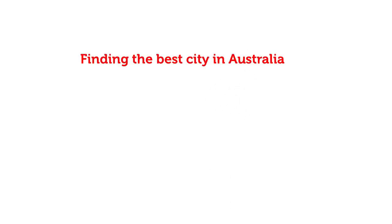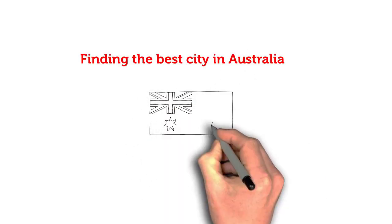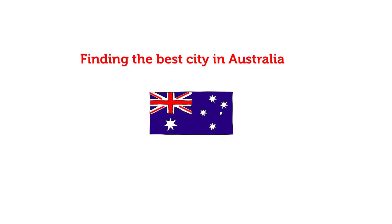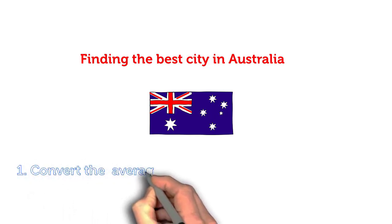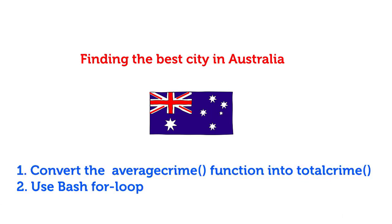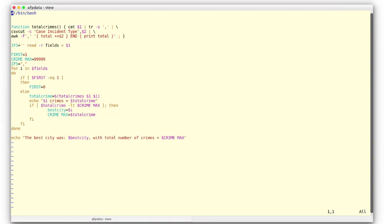Our final quest in this project is to find the best city in Australia that had the least number of crimes over the pre-2013 period. Essentially, we would need to find the summation of the city columns and then compare the sums to find the city with the lowest total sum. To develop the code, we will reuse the average function's sum part developed above and call it inside a loop. Now let's see the full code. The first line in the script, crimestat.sh, indicates to the system which program — bash — to use to run the file.